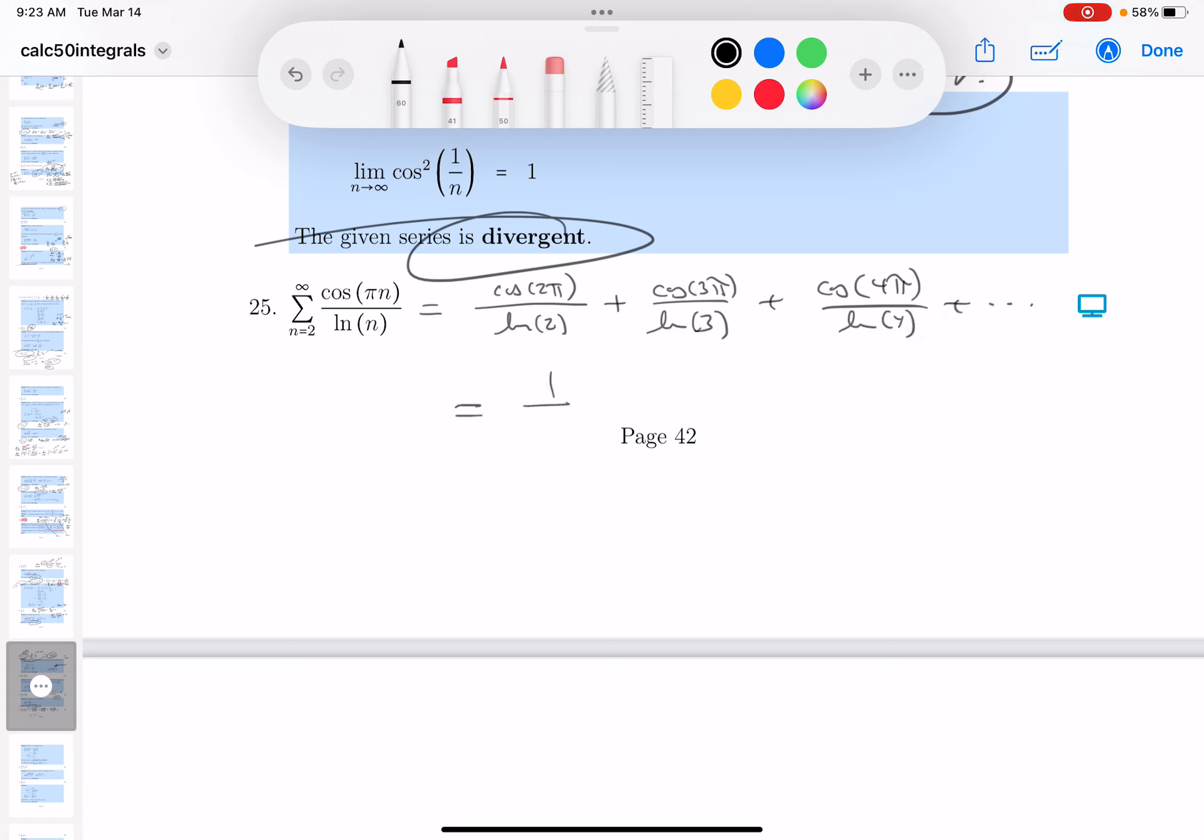What I want to know about this over here, it's really 1 over the natural log of 2. The next term is going to be minus 1 over the natural log of 3. The next term is going to be plus 1 over the natural log of 4. And again, I hope you're convinced now that you've got an alternating series at this point.